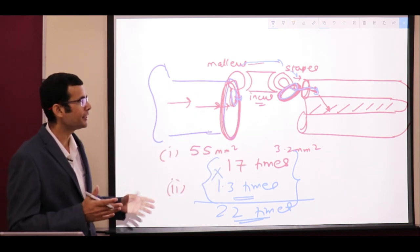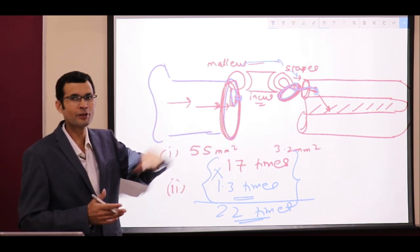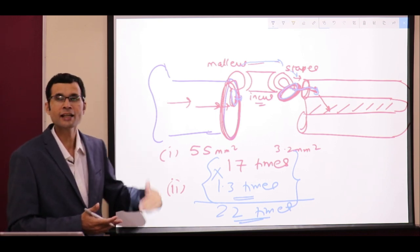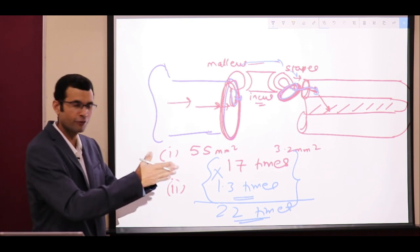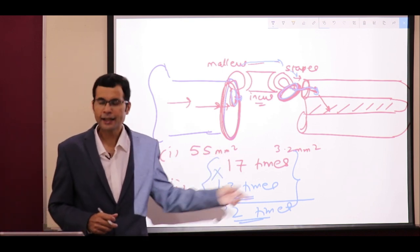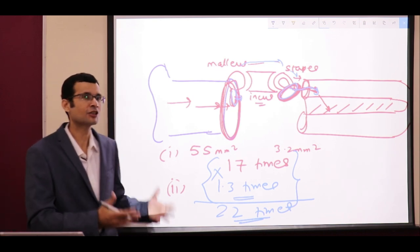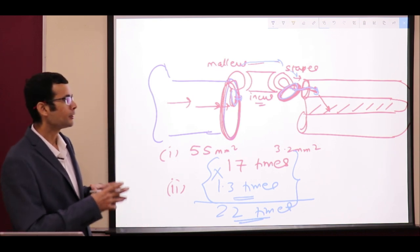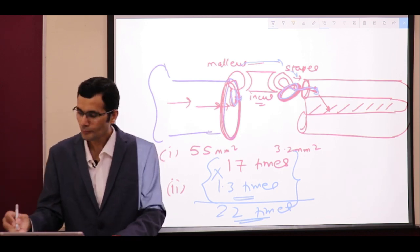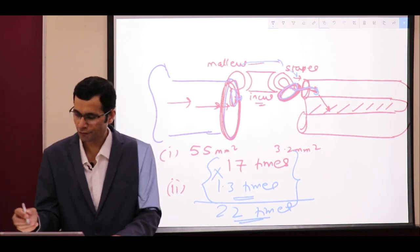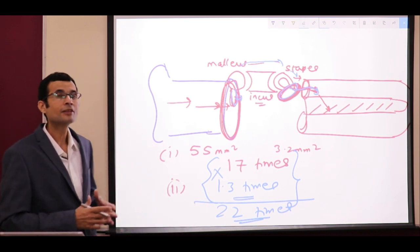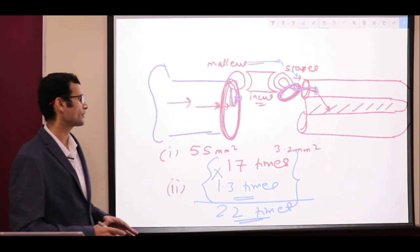This 22-times amplification was necessary because the cochlea contains fluids, so the pressure wave of sound needs extra force to move through those fluids. That is the second function of the middle ear — enhanced transmission of sound.